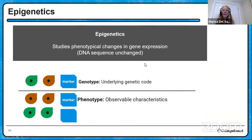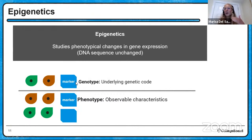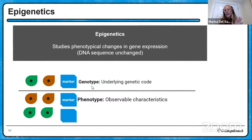Epigenetics studies changes — scientists study phenotypical changes, which are observable changes in gene expression. The DNA sequence remains unchanged, but the expression of that DNA can change based on whether a marker is present or not. For example, if someone has a green-eye/brown-eye genotype but a marker stops the green eye from being displayed, that person will show up with a brown-eye phenotype. But through maternal stress or changes inside the uterus, that marker can be altered, and the child might be born with green eyes. DNA sequence the same — this becomes important when we talk about epigenetics and disorders.